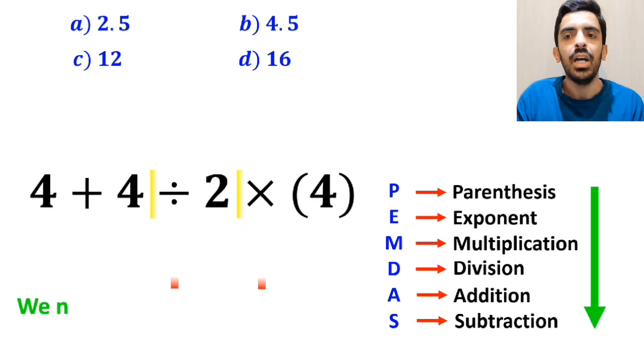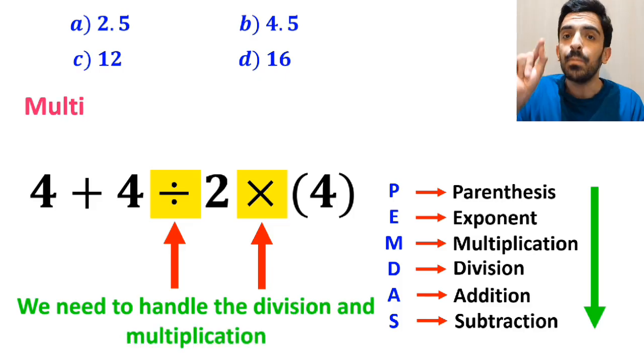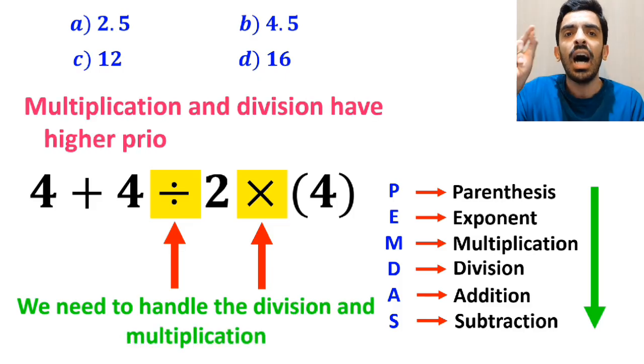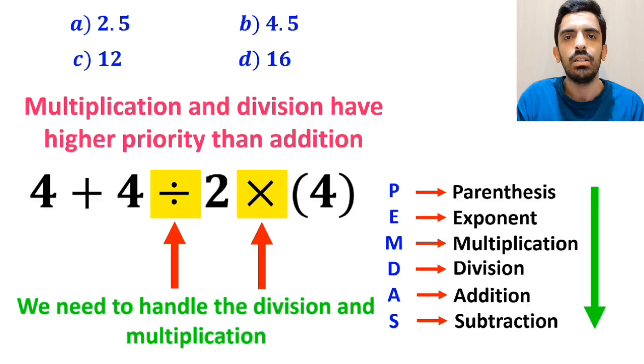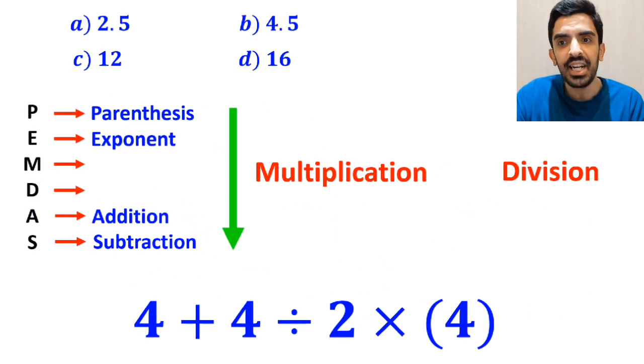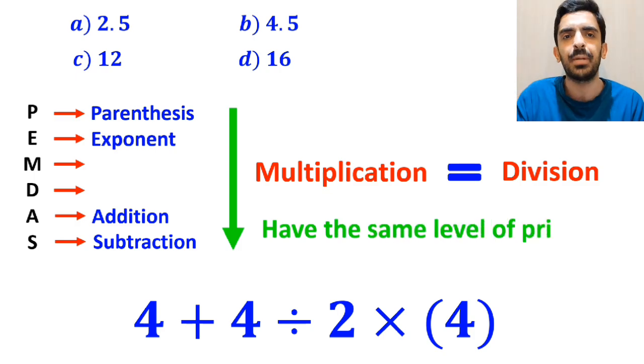In the next step, we need to handle the division and multiplication, because multiplication and division have a higher priority than addition. However, it's very important to note that in the PEMDAS rule, multiplication and division have the same level of priority.